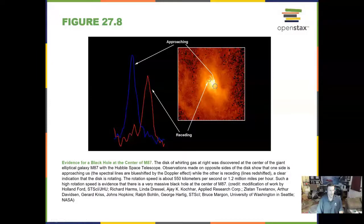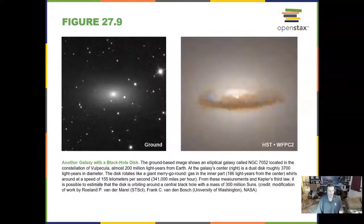We do see evidence for a black hole at the center of M87. Here is another galaxy with a black hole, with a disk of dust and gas around it.